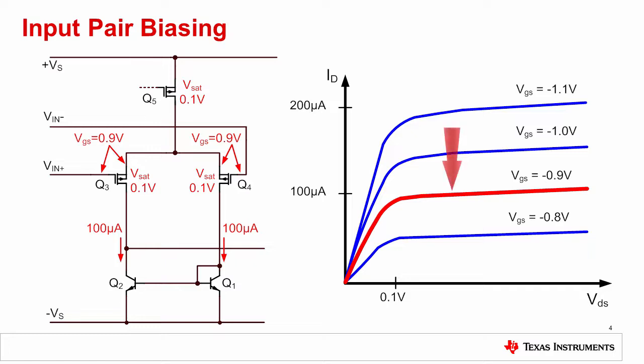In this example, if the operating point was shifted so that VDS is less than 100 millivolts, the device will operate in an undesired nonlinear condition. This is the common mode voltage limit of the op amp.